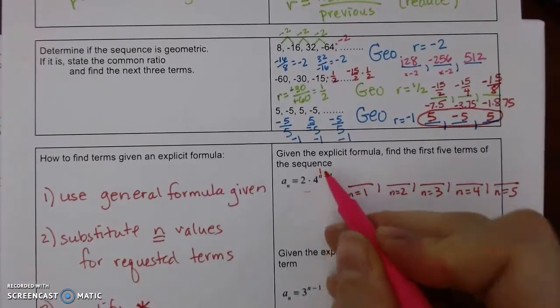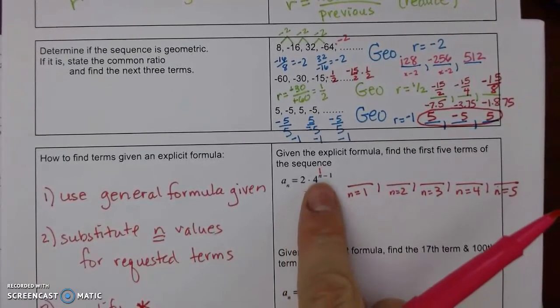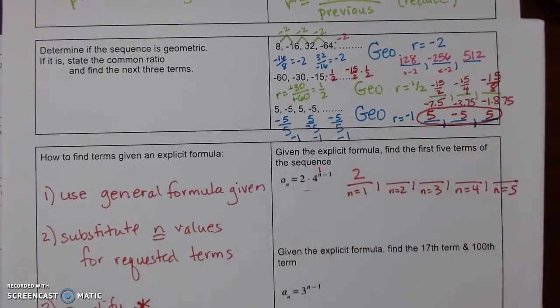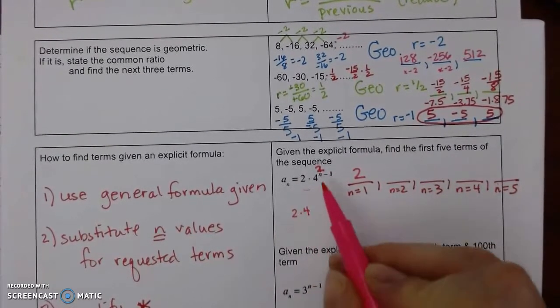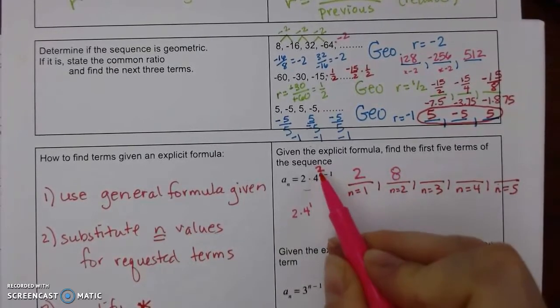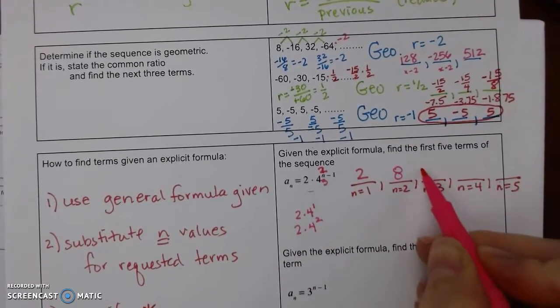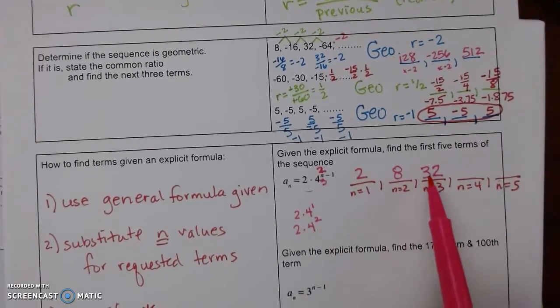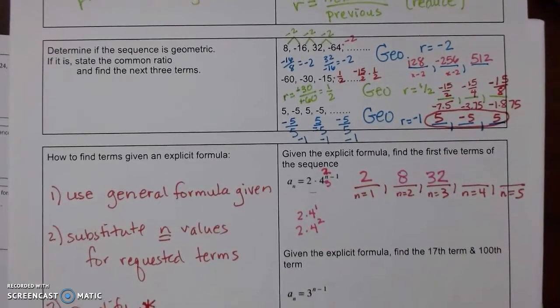For n equals 1, I'm going to type that into a calculator. So, 2 times 4 to the 1 minus 1 power. 4 to the 0 is 1 times 2. Then, I'm going to substitute 2. So, 2 times 4. 2 minus 1 is first. 2 times 4 is 8. Then, I'll substitute 3. So, 2 times 4 squared. And I can kind of see I'm multiplying 4 each time, and that was the base. That's not a coincidence. That is how it works.